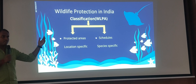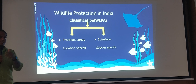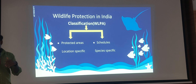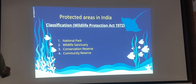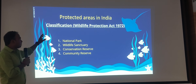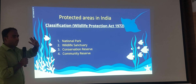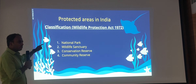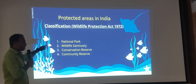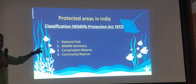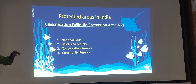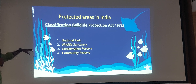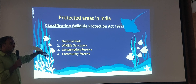The schedule will have a list of species which will be protected in various categories, and location-specific areas will also have various categories. We have four categories of areas: one is national park, second is wildlife sanctuary, third is conservation reserve, and fourth is community reserve. The severity of protection increases from community reserve up to national park.